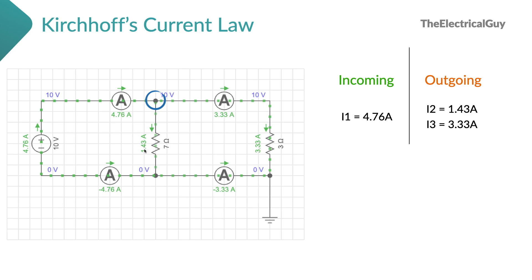Now the very important part: considering this node, whenever the current is incoming towards that node we label that current as positive. Incoming current towards the node is labeled as the positive current. Similarly, the outgoing current will be labeled as the negative current. So I1 will be labeled as positive, and I2 and I3, since they are outgoing currents, will be labeled as negative.